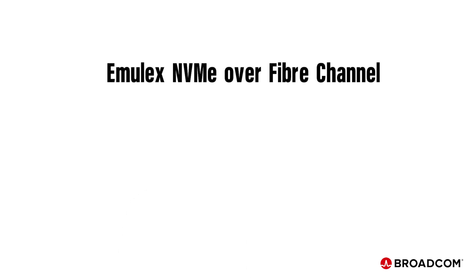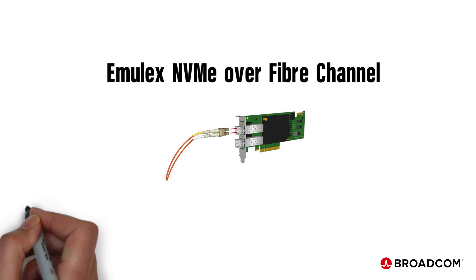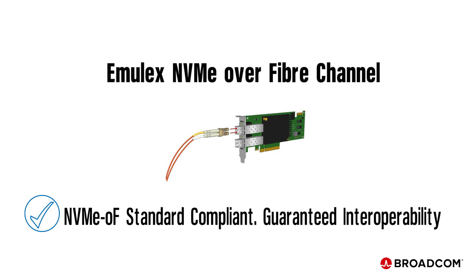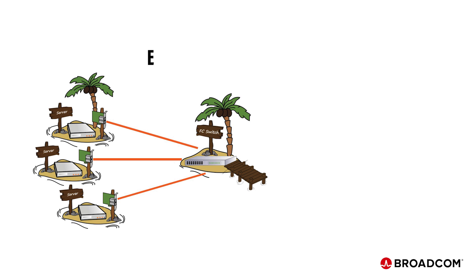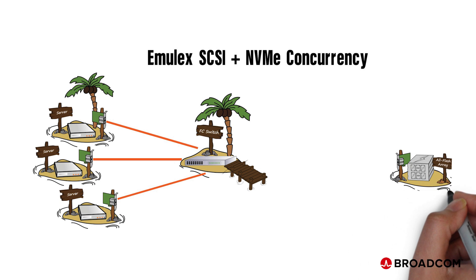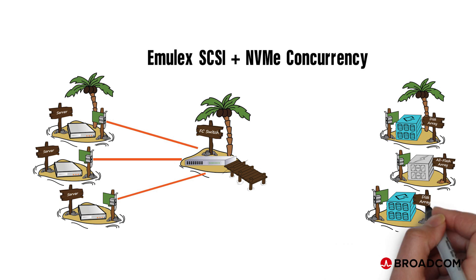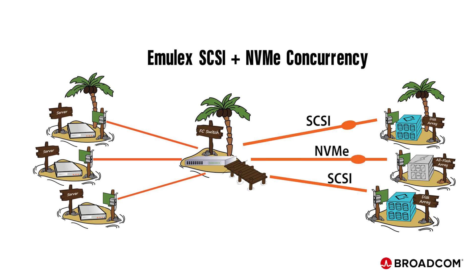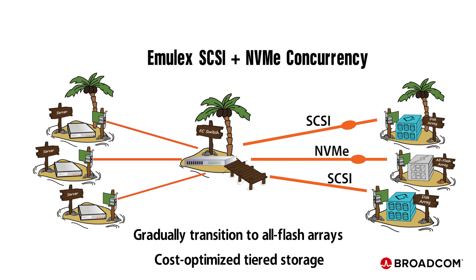Emulex Fiber Channel Host Bus Adapters by Broadcom provide a number of benefits compared to other options. First, Emulex HBAs support the NVMe over Fabrics standard for guaranteed interoperability. Secondly, enterprises with a mixed storage infrastructure require dual protocol server IO. Only Emulex HBAs provide a concurrent SCSI and NVMe solution so that existing Fiber Channel deployments running SCSI with SAS or SATA hard disk drives can coexist with the new NVMe drives. This feature enables enterprises to gradually transition to an all-flash data center, as well as providing a cost-optimized tiered storage architecture.